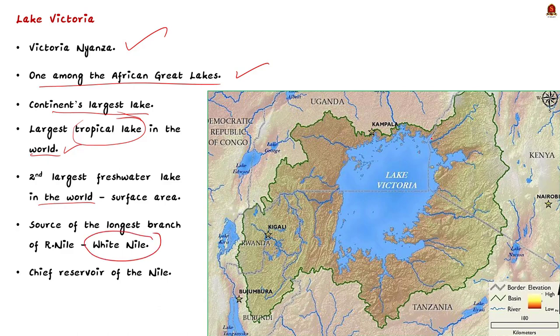Coming to the geographical location of the lake, it lies mainly in Tanzania and Uganda, but some parts of it are also present in Kenya.